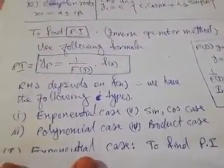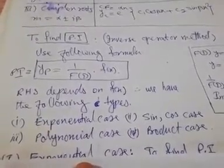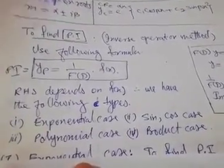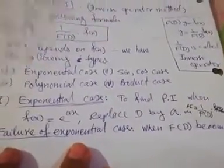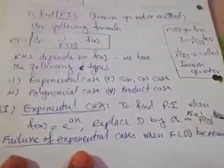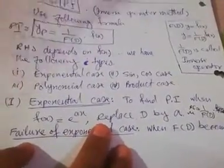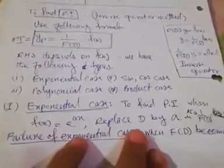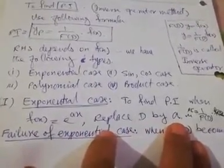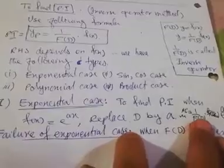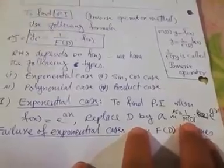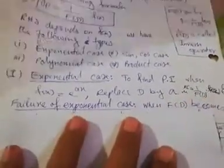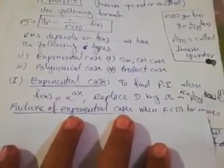In the exponential case, when f(x) is e^(ax), you replace capital D by a in 1/f(D)·e^(ax) — that is, replace D with a in f(D). If f(a) is non-zero, that gives the particular integral solution.